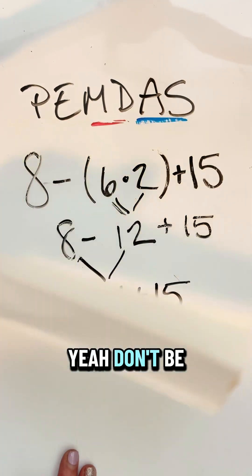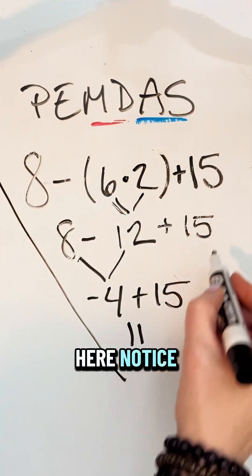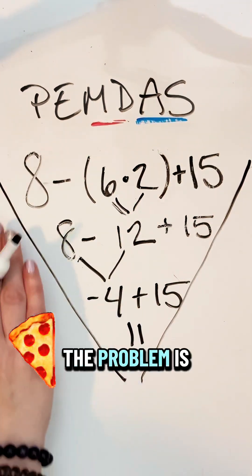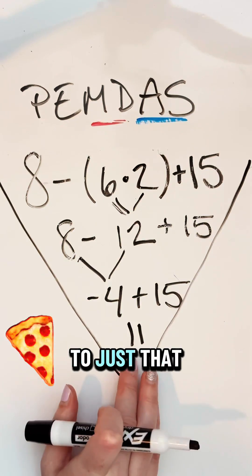Can you cover up as you go? Yeah, don't be overwhelmed. There's a lot here. Notice, kind of looks like a slice of pizza. The problem is the crust, and then you work your way down to just that one number.